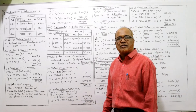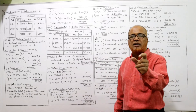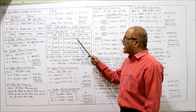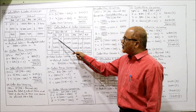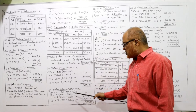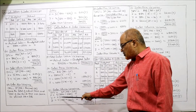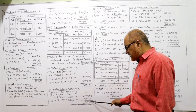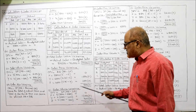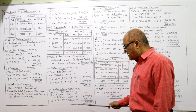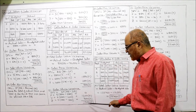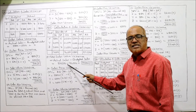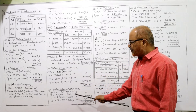Sales volume variance equals standard price into (actual quantity minus standard quantity). Standard prices 5, 6, 7; actual quantities 5,000, 6,000, 4,000; standard quantities 5,000, 4,000, 3,000. For X: 5,000 minus 5,000 equals 0 — no deviation. For Y: 6,000 minus 4,000 into 6 equals 12,000 favorable. For Z: 4,000 minus 3,000 into 7 equals 7,000 favorable. Total: 19,000 favorable. Verification: price variance 500 favorable plus volume variance 19,000 favorable equals 19,500 favorable — matching the sales value variance, so calculations are correct.